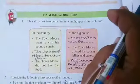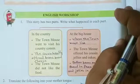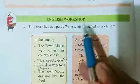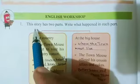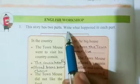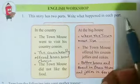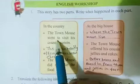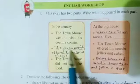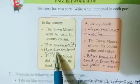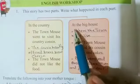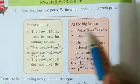Hi friends and my dear students, today we work on English workshop. The story has two parts. What happened in each part? First, in the country: the town mouse went to visit his country cousin. The cousin heartily offered beans, bread and cheese. The town mouse did not like the food at the big house.